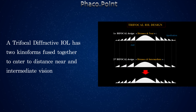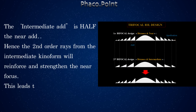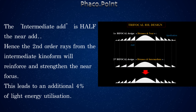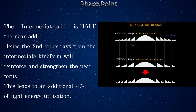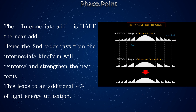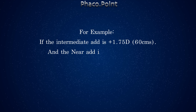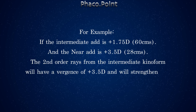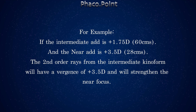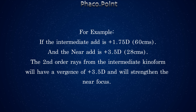A trifocal diffractive IOL has two kinoforms fused together to cater to distance, near, and intermediate vision. The intermediate add is half the near add, and hence the second order rays from the intermediate kinoform will reinforce and strengthen the near focus. This leads to an additional 4% of light energy utilization in a trifocal design. For example, if the intermediate add is 1.75 D and the near add is 3.5 D, the second order rays from the intermediate kinoform will have a vergence of 3.5 D, which strengthens the near focus.